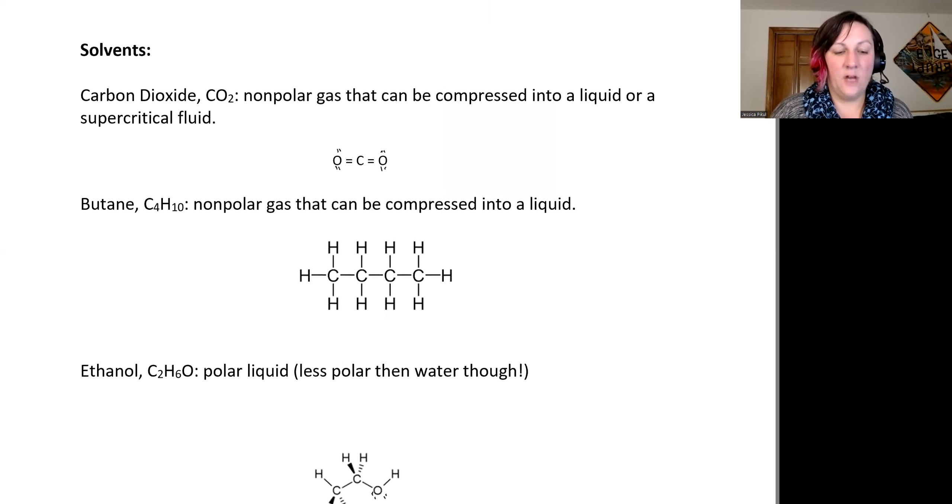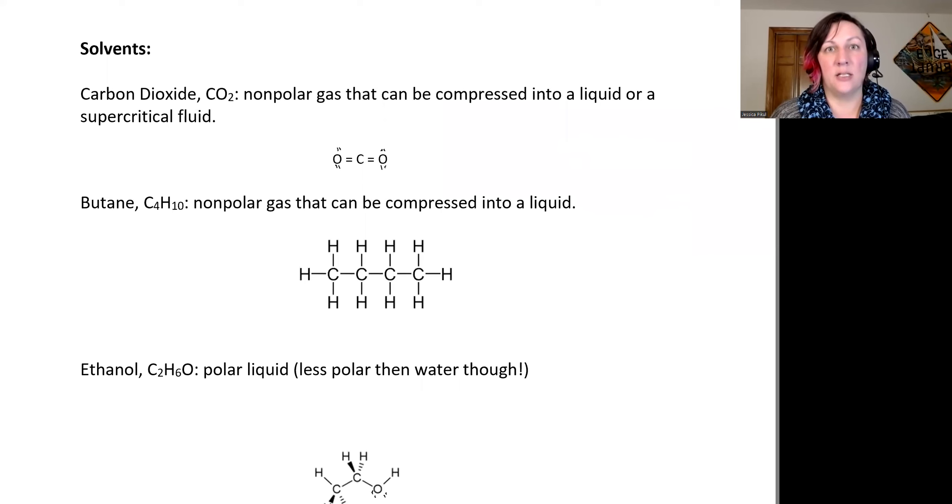So here are the solvents that we're going to focus on that are primarily used in industrial scale extraction processes. We're going to focus on carbon dioxide, butane, and ethanol. There are others—you may see glycerin tinctures readily available, and I have seen some work around propane extractions too, which is sometimes used in the essential oil industry. But we're going to focus on these three as they're the most common.